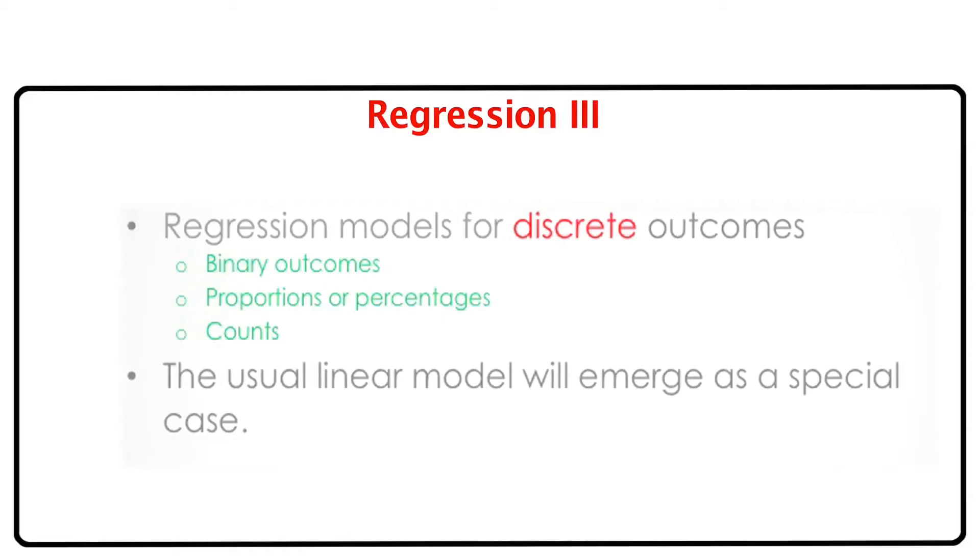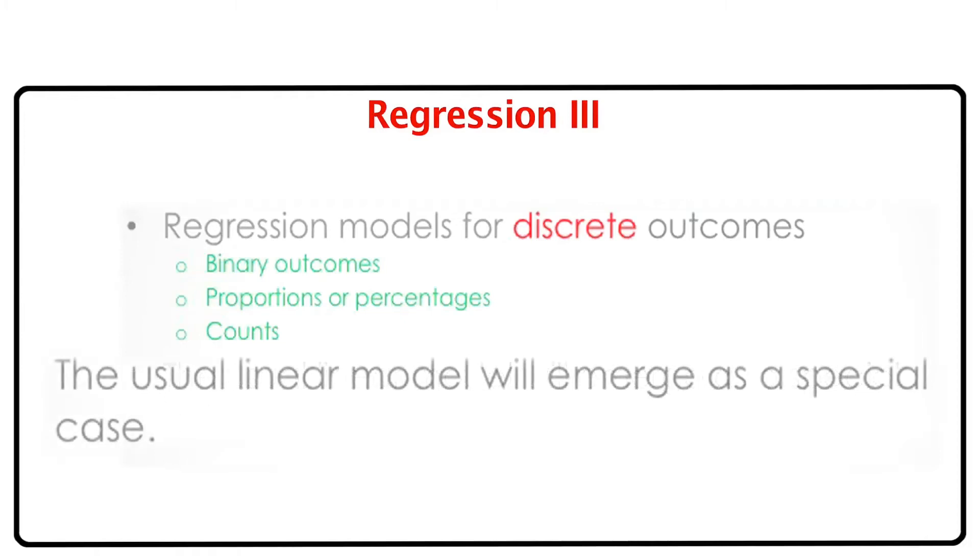When we look at the theoretical framework, we will see that this leads to a particular class of models called the generalized linear model, of which the linear model which you have studied in Regression 1 and Regression 2 will emerge as a special case. But more on this later. For now, let us look at four motivating examples.